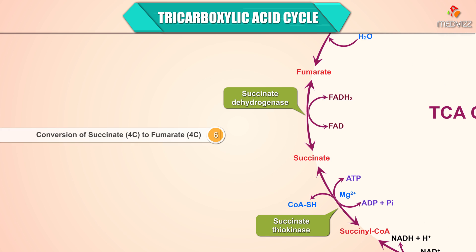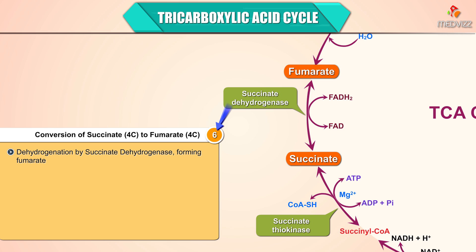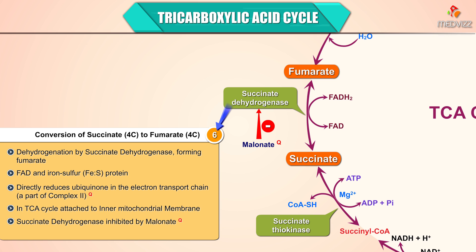Step 6 is the conversion of succinate to fumarate. Succinate undergoes dehydrogenation by succinate dehydrogenase to form fumarate. The enzyme contains FAD and iron-sulfur protein. It directly reduces ubiquinone in the electron transport chain and is part of complex II. It is the only enzyme in the citric acid cycle attached to the inner mitochondrial membrane. Succinate dehydrogenase is inhibited by malonate.